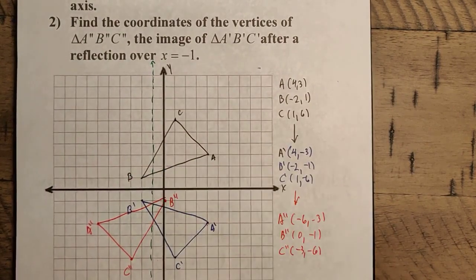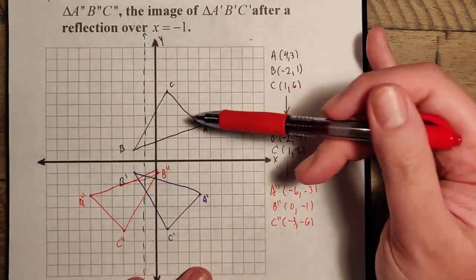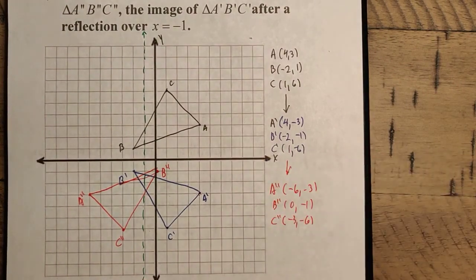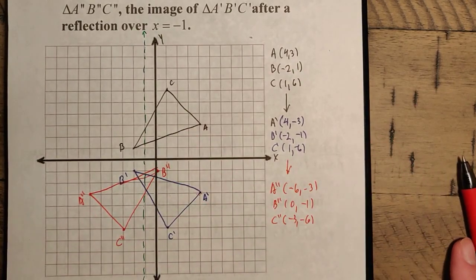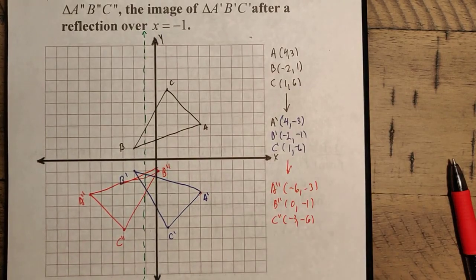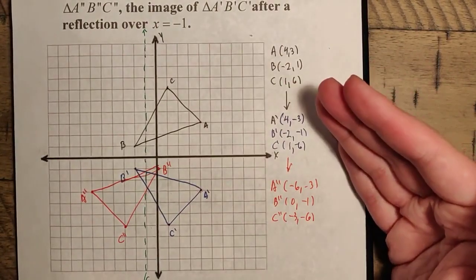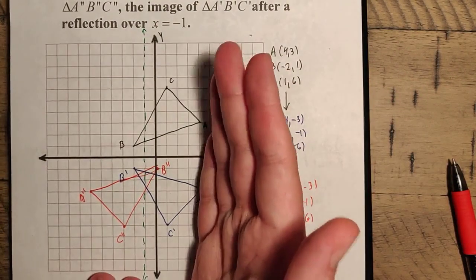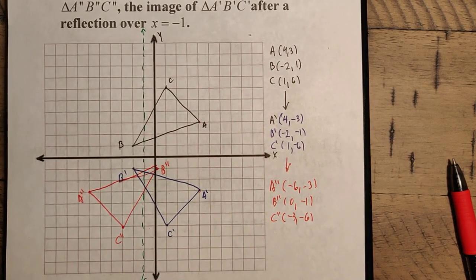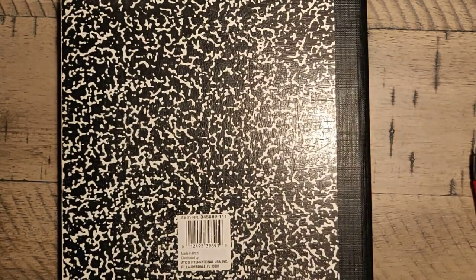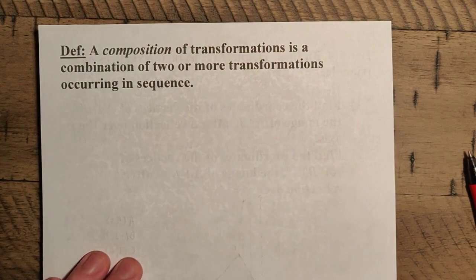So looking at what's going on here, we can see that our triangle has undergone a couple of transformations. The most important part is that the black triangle goes directly to the red triangle — the blue triangle is just an intermediary. The black and red triangles are the pre-image and image respectively. We're doing multiple transformations at once, applying them in sequence. We call this composition.